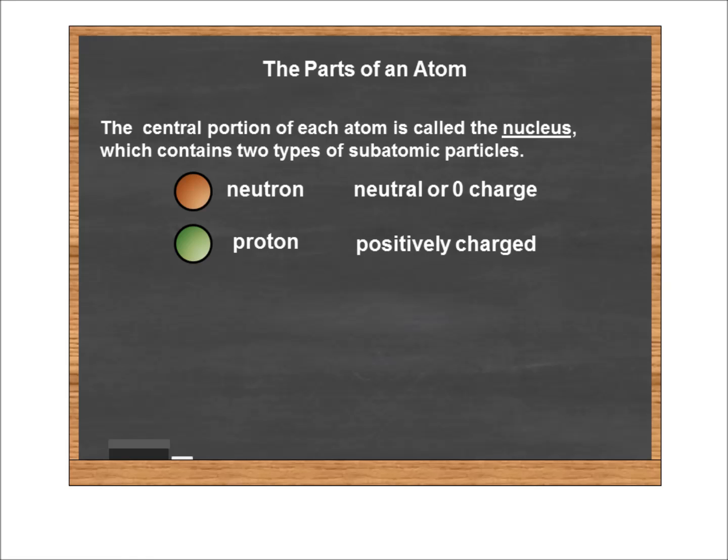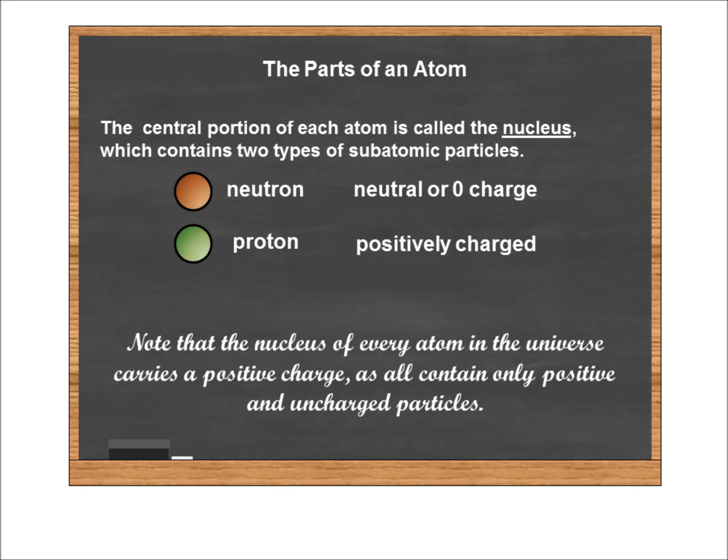Now, just do some basic math in your head. Every atom in the universe has in its nucleus two types of particles, positively charged or zero-charged particles. That means the net charge of every atom in the universe is positive. All atoms have a positively charged nucleus.